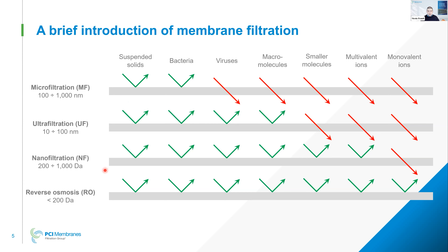You can use nanofiltration or reverse osmosis membranes as post-treatment to MBR to further remove micropollutants, contaminants of emerging concern like pesticides, herbicides, PFOS, and so on. Membrane technologies can be combined together. But for today, we'll mostly focus on micro and ultrafiltration membranes because this is what we use in the MBR process.